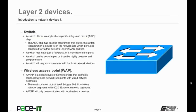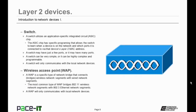A switch can only communicate with local network devices. Another layer 2 device is the wireless access point, the WAP. A WAP is a specific type of network bridge that connects or bridges wireless network segments with wired network segments. The most common type of WAP bridges an 802.11 wireless network segment with an 802.3 Ethernet network segment. Just like a switch, a wireless access point will only communicate with local network devices.